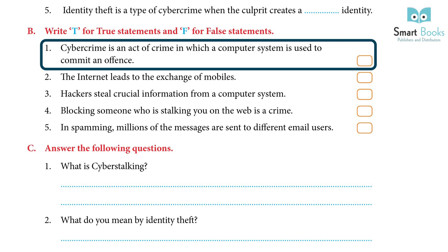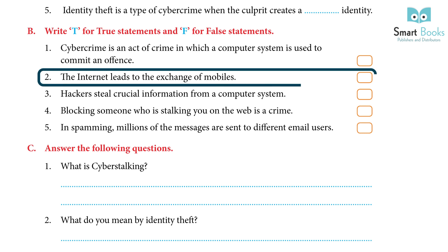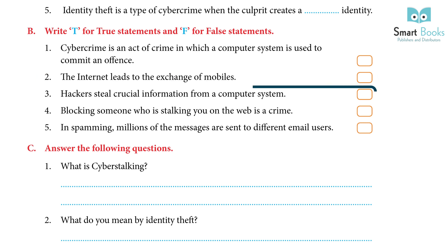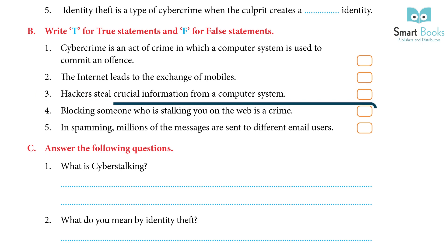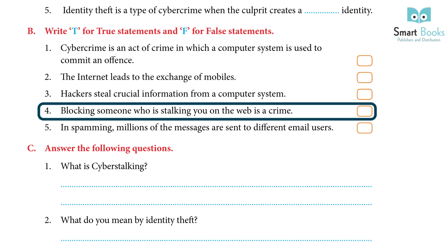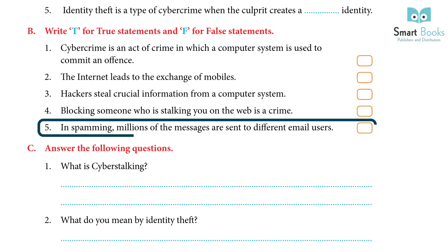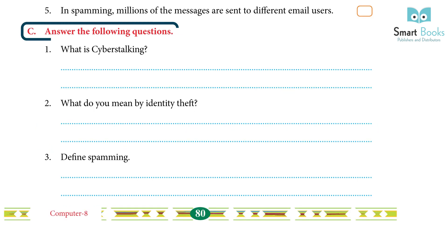True or False: 1. Cyber crime is an act of crime in which a computer system is used to commit an offense — True. 2. The internet leads to the exchange of mobiles — False. 3. Hackers steal crucial information from a computer system — True. 4. Blocking someone who is stalking you on the web is a crime — False. 5. In spamming, millions of messages are sent to different email users — True.